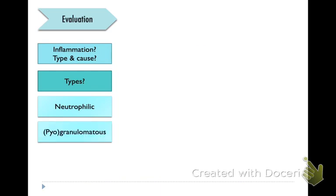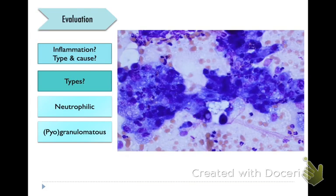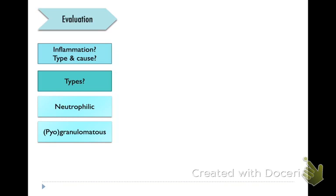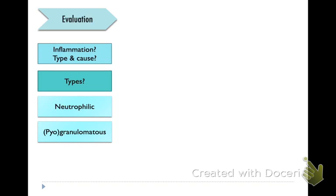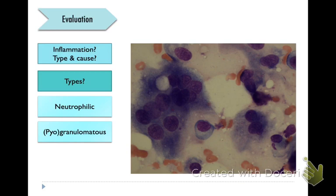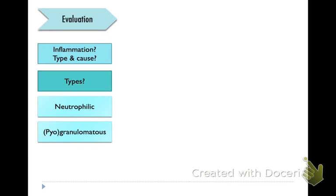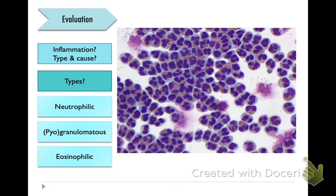You can also see piogranulomatous — again the pio part in parentheses. So here we've got a bunch of inflammation, mostly macrophages but also neutrophils in the background, a bunch of neutrophils and all these clusters and clumps of macrophages. And then we've got more of granulomatous inflammation — we've got multinucleated giant cells present, some plasma cells without really the neutrophilic components being present, so a granulomatous type of inflammation.